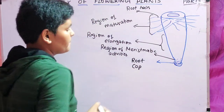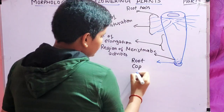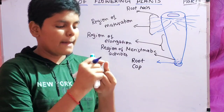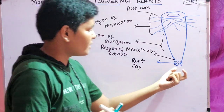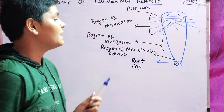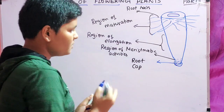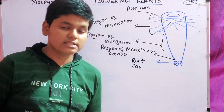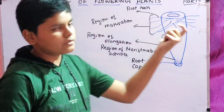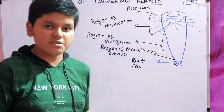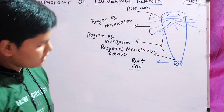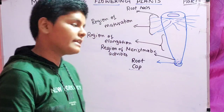First is the root cap. The root cap is just like a thimble-like structure — a thumb-apex-like structure that protects the region of meristematic cells. This root cap acts as a covering to protect the meristematic cells so that they won't get damaged. If meristematic cells get damaged, the growth of the root will stop and the plant will die.